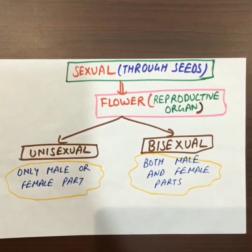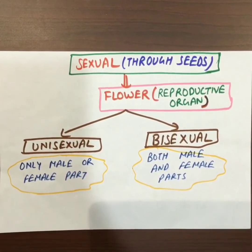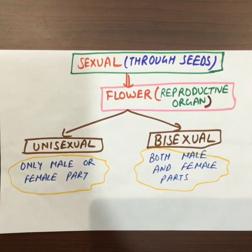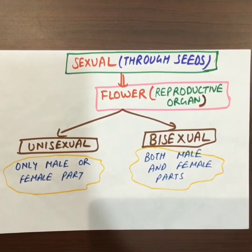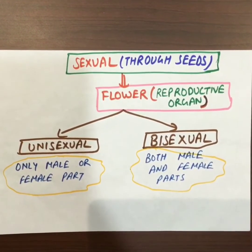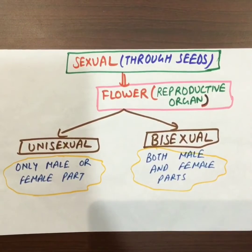Now that we have learnt about asexual reproduction, let's learn about sexual reproduction. Sexual reproduction takes place through seeds. The flower is the reproductive organ of the plant. There are two types of flowers: unisexual and bisexual. Unisexual flowers have only the male part or the female part, while bisexual flowers have both the male and female parts.